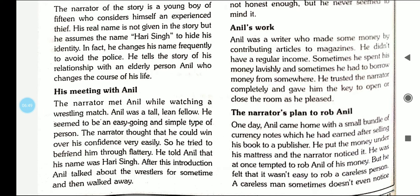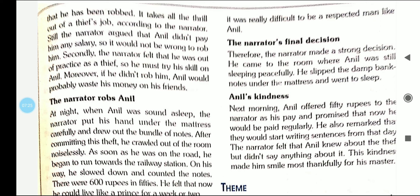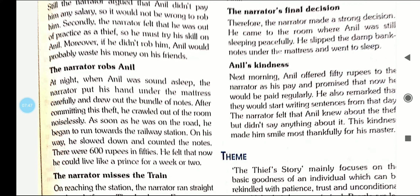Now the narrator makes a plan to rob Anil. Anil had a lot of currency notes and money. When he sold his book to a publisher, he put the money under his mattress on his bed, and Hari Singh saw it. He thinks it is very difficult to rob a careless person because a careless man doesn't notice that his money has been stolen. He also reasons that Anil is going to his friends the next day, so it is a good opportunity to take the money.